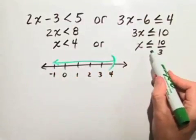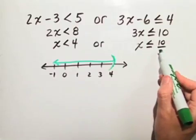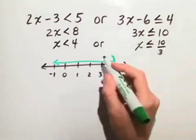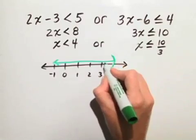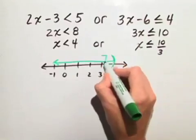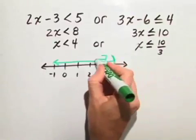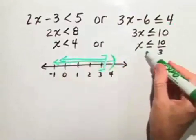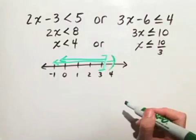Or we have x is less than or equal to 10 thirds. Notice we have the equal sign here, so we're going to have to draw a bracket at 10 thirds, which is 3 and 1 third. And we draw our arrow to the left, because we again want values less than or equal to 10 thirds.